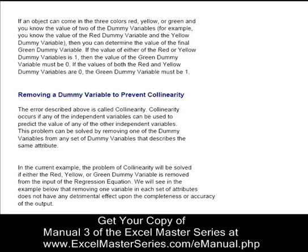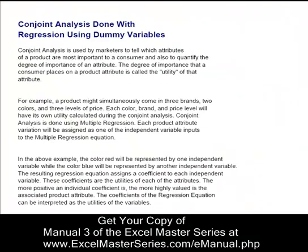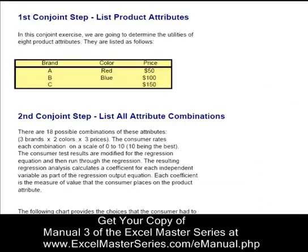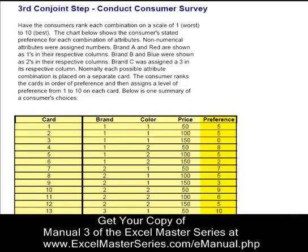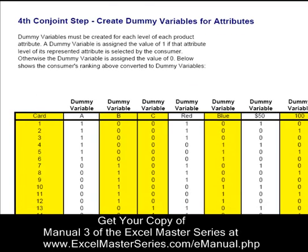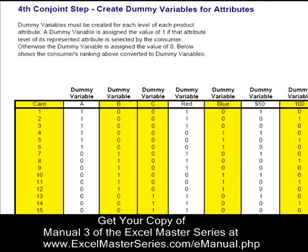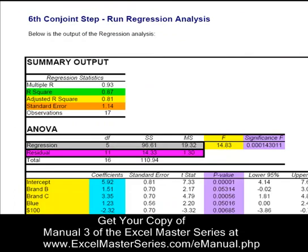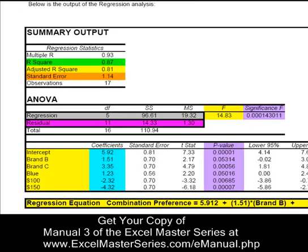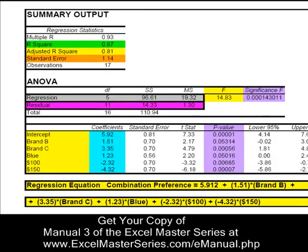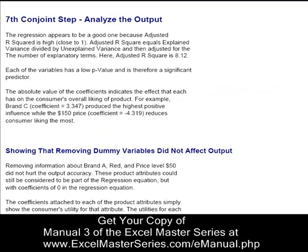Now we're covering dummy variables and using conjoint analysis to show how they work. The conjoint analysis has a seven-step process in Excel, and we walk you through how to do conjoint in Excel. It uses dummy variables, and you'll fully understand how they're used when you see them in this context.